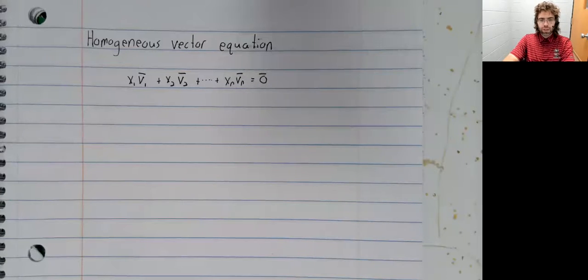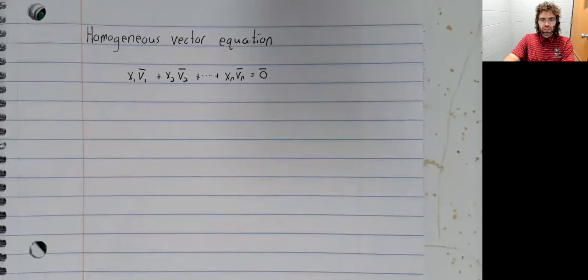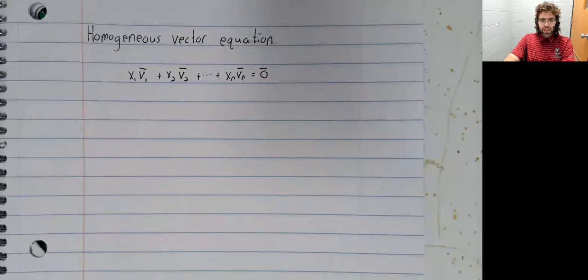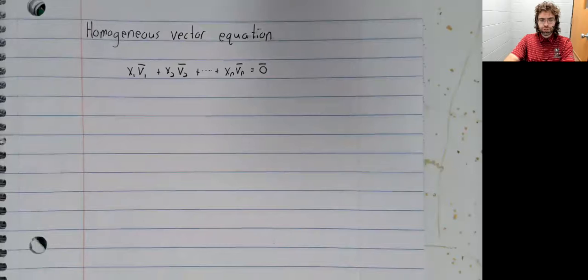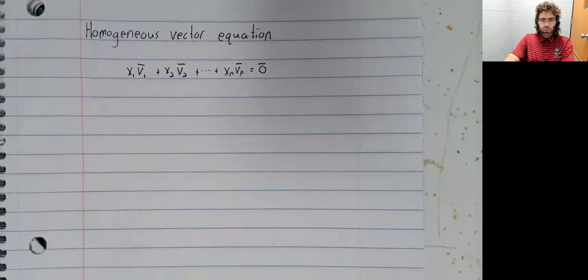We've made the observation that systems of linear equations are vector equations are matrix equations. We defined homogeneous systems of linear equations. Those correspond to vector equations like so. And these homogeneous vector equations can either have a single trivial solution or infinitely many solutions.